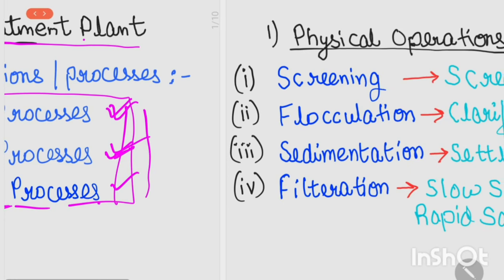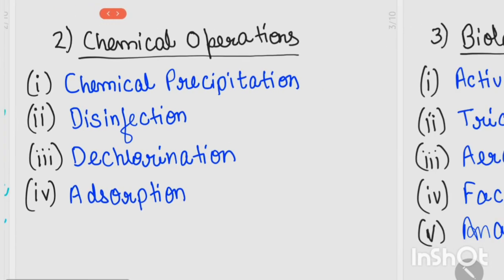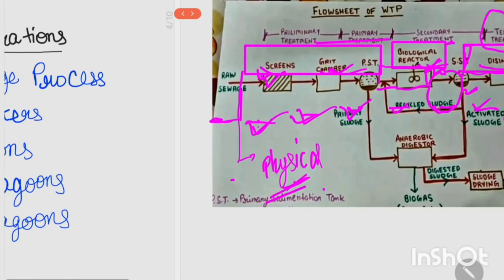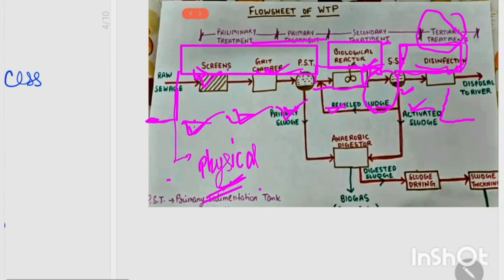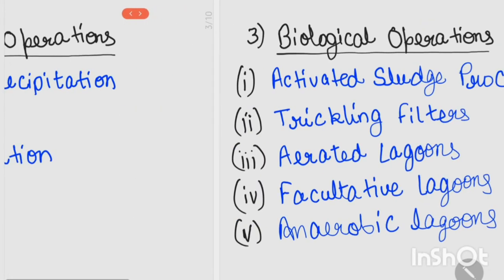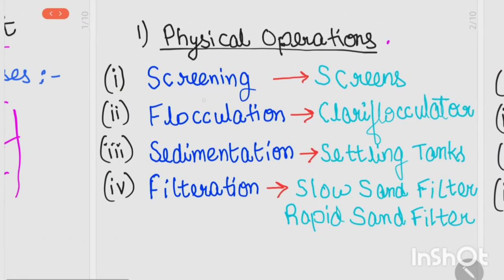First of all, we will talk about physical operations and processes. As you can see in our diagram, there are screens, grit chamber, PST, and SST — these four are physical processes. The physical processes include screening, flocculation, sedimentation, and filtration.